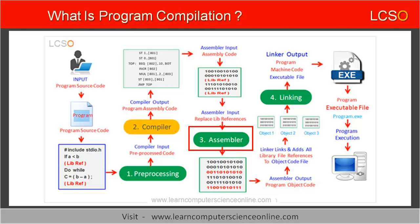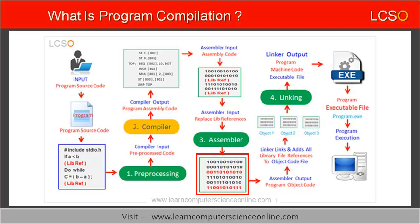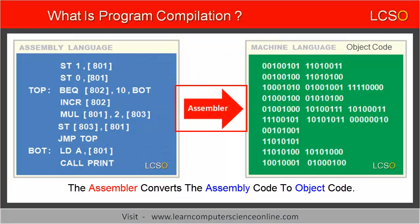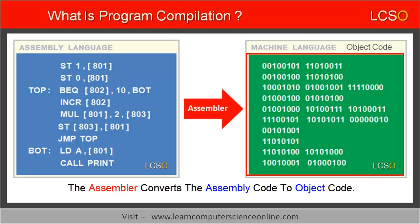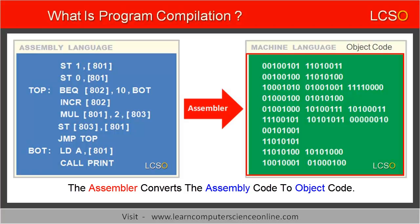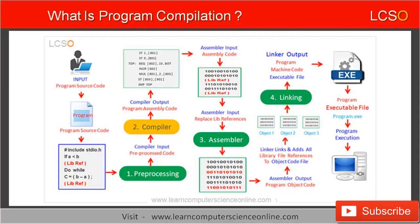Assembly is the third stage of the program compilation process. In this stage, the compiler accepts the assembly code instructions as input and provides the object code as an output file with a .o extension. The assembler converts all low-level assembly program instructions into their equivalent machine instructions. These instructions are platform-dependent and compiled for a specific architecture. The object code of the source file can still contain library references that need to be resolved.